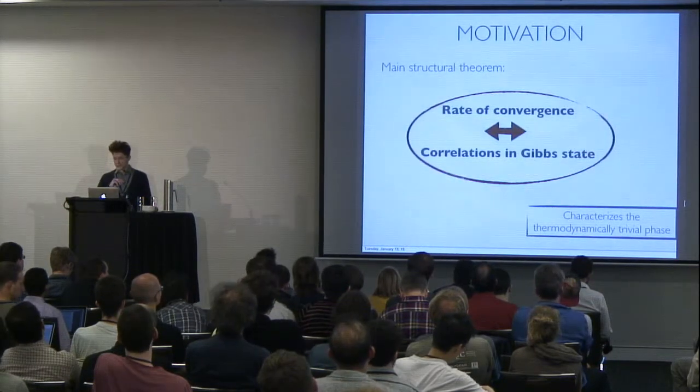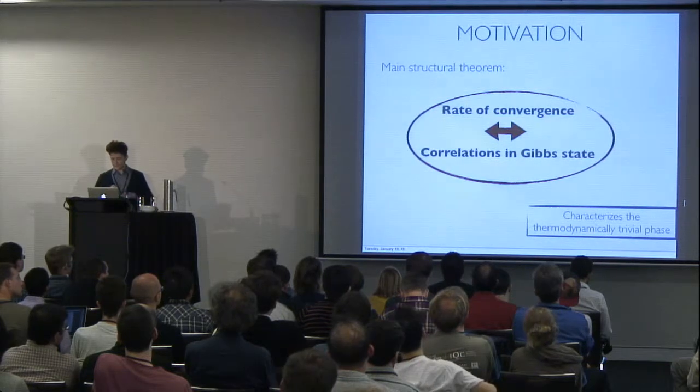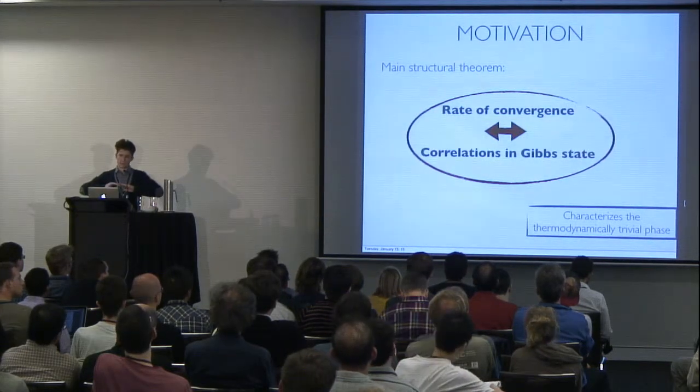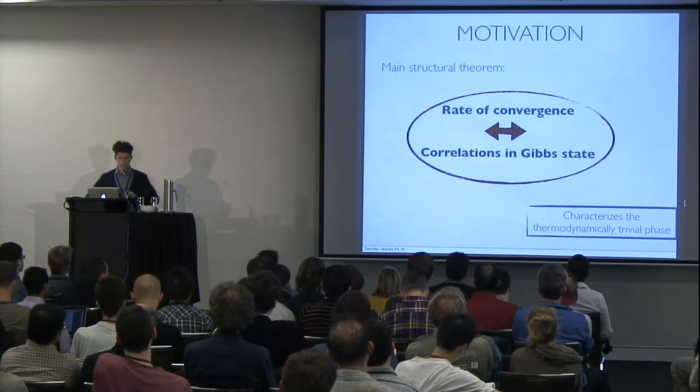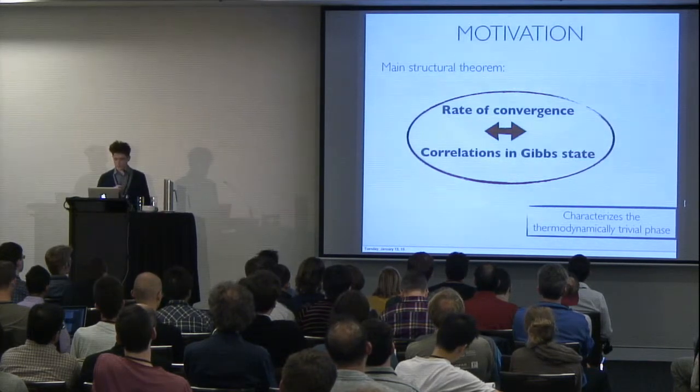So, if you don't retain anything else from the talk, this is what you have to retain. The other motivation is that the rate of convergence of your algorithm that takes you to the Gibbs state, to your thermal state,